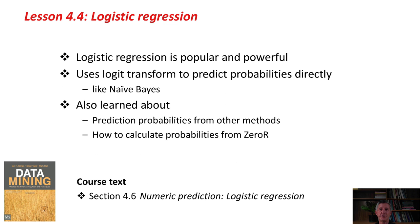The result is logistic regression, a popular and powerful machine learning method that uses the logit transform to predict probabilities directly. It works internally with probabilities like Naive Bayes does. We also learned in this lesson about prediction probabilities that can be obtained from other methods and how to calculate probabilities from 0R. You can read in the course text about logistic regression in section 4.6, and now you should go and do the activity associated with this lesson. See you soon. Bye for now.